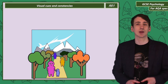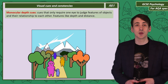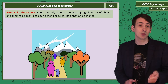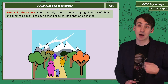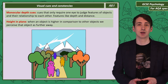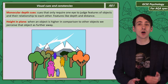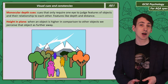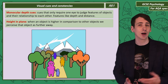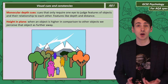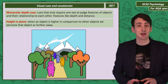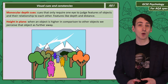Some cues are called monocular, meaning we only need one eye to judge them and assume features like depth or distance. Let's start with height in a plane: when an object is higher up compared to other objects, we assume it's further away. So if I move the light blue person up, your perspective may change, seeing them as further away.